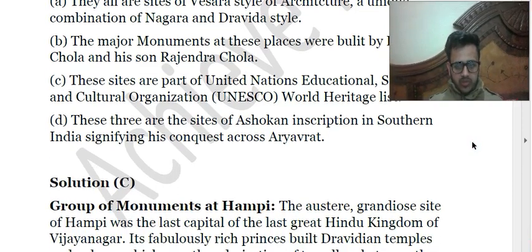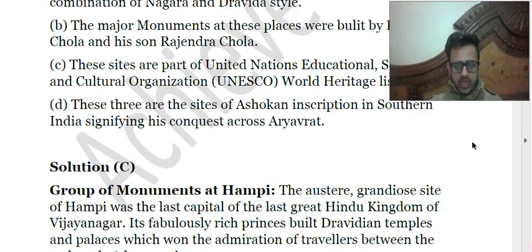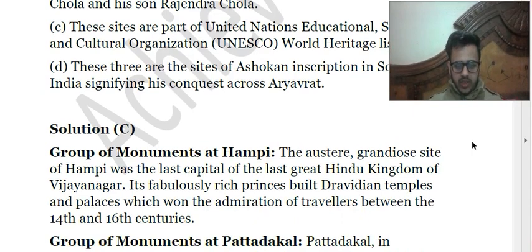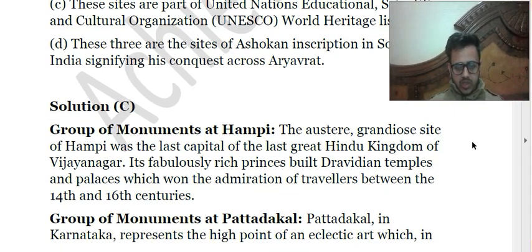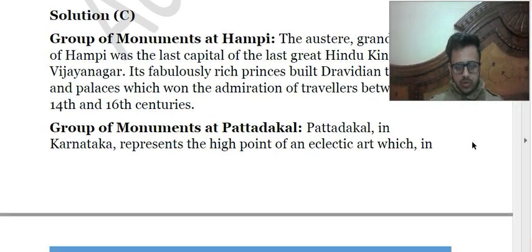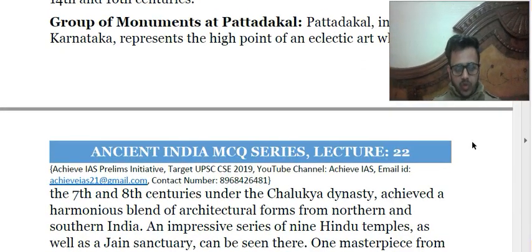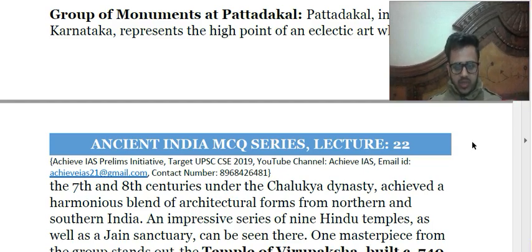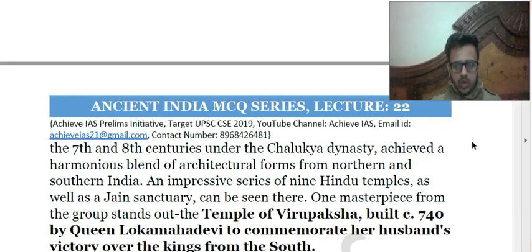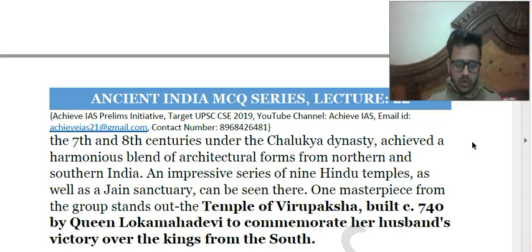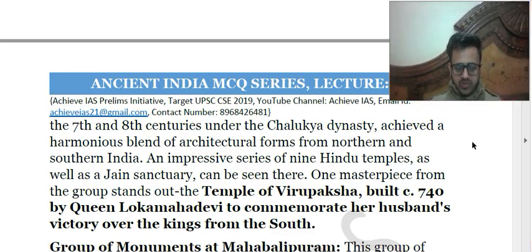Hampi was the capital of the Vijayanagara Empire, the last great Hindu kingdom of medieval India, and its princes built Dravidian temples. The Patadakal group of monuments is in Karnataka and represents a high point in eclectic art. These monuments were built by the Chalukyan dynasty — they made nine Hindu temples as well as a Jain sanctuary. The most famous among them is the Virupaksha temple, built by Queen Lokamahadevi to commemorate her husband's victory over kings from the south.